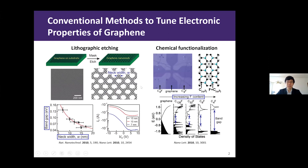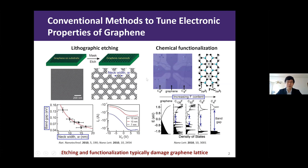Another well-established method is to chemically functionalize the surface of graphene. For example, upon fluorine-containing plasma treatment, bonds are formed between carbon and fluorine atoms, and this bond formation changes the distribution of electron density in carbon atoms and opens up a band gap that widens with fluorine coverage. However, both these etching and functionalization methods typically damage the graphene lattice and compromise the mechanical stiffness.